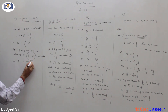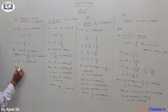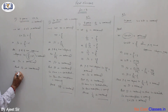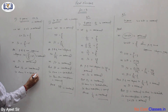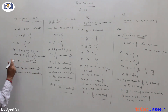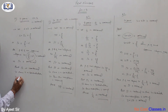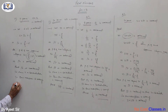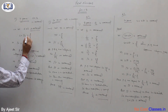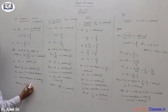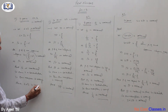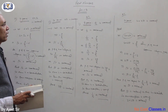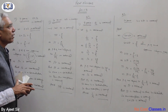Therefore root 2 would be rational. But we know that root 2 is irrational — this is a contradiction. Our assumption was that 6 plus root 2 is rational, which is wrong. Hence 6 plus root 2 is irrational. This is the solution of your third part. This was your Exercise 1.3 for Real Numbers.